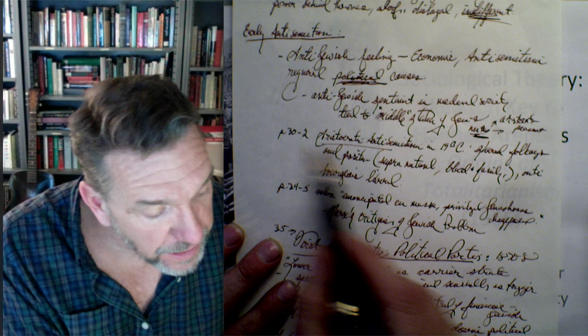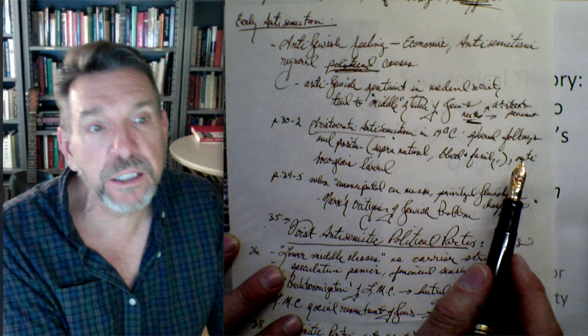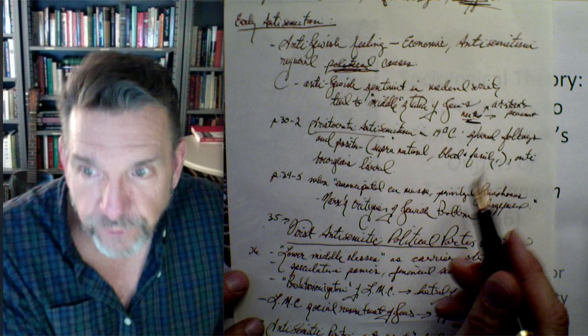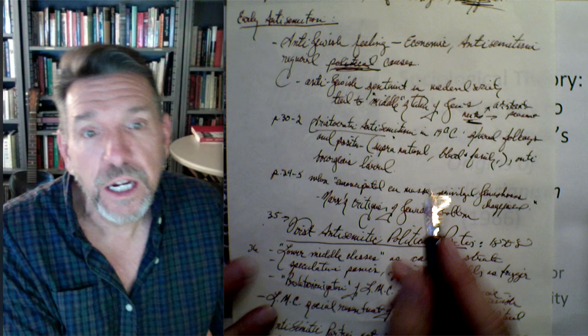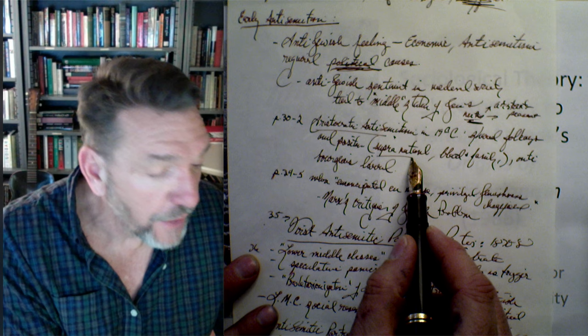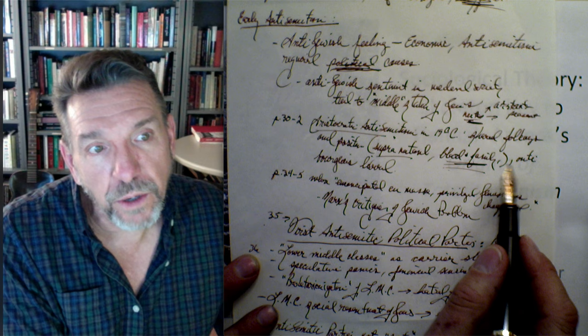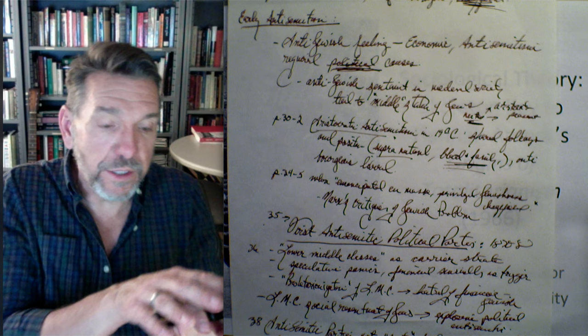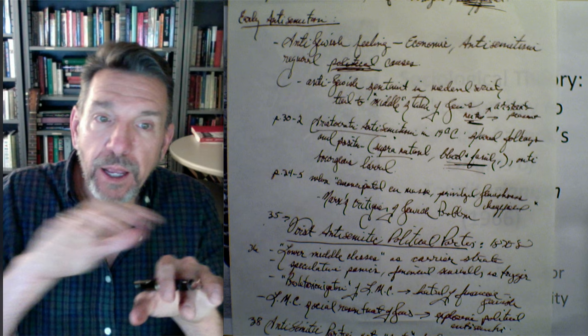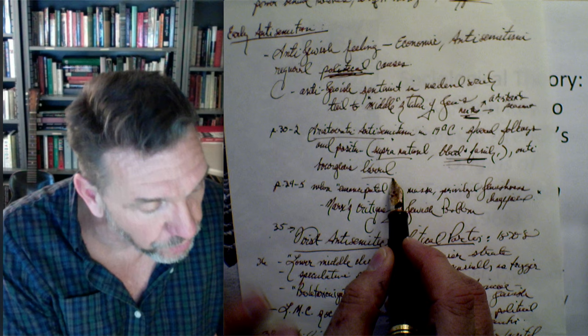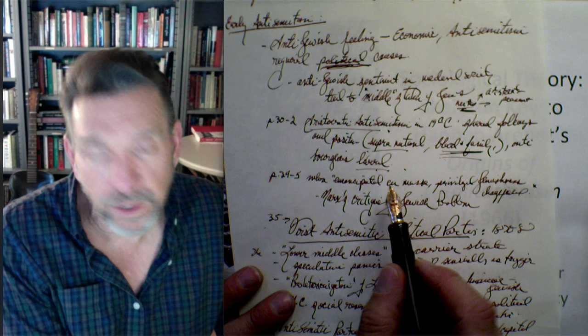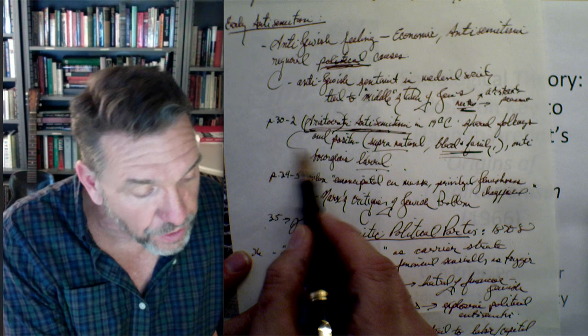So Jewish people played a kind of middle-class economic role and therefore anti-Jewish sentiment was often present in European society. Pages 30–32: she writes about aristocratic antisemitism in the 19th century — an odd thing where aristocrats and Jewish people shared a number of folkways and even a kind of social position, especially elite Jews who were financiers. They tended to be supranational, not tied to the nation, not citizens as such. Blood and family mattered, bloodlines and so on.